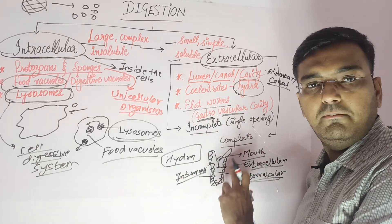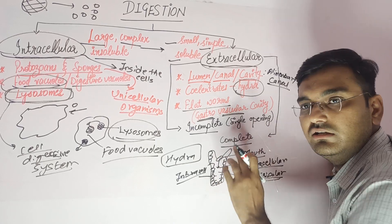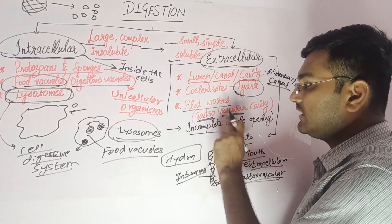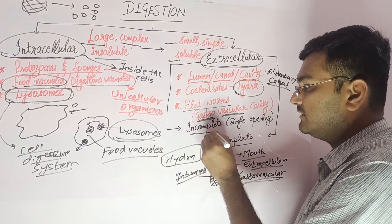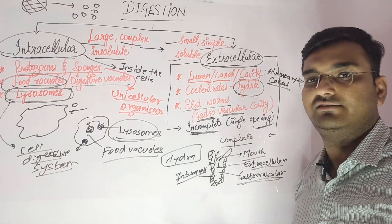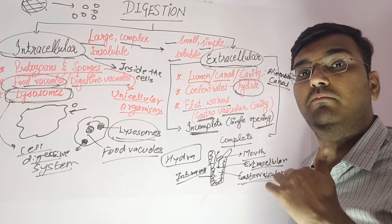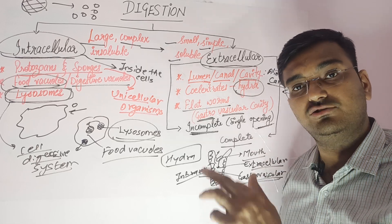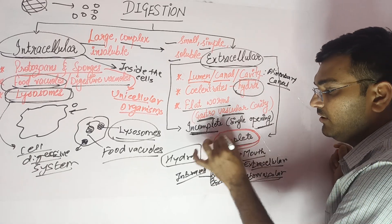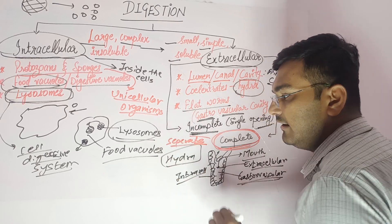Now, in hydra there is only one opening. That single opening serves as the mouth for ingestion, and excretory waste products also exit through the same opening. This type of extracellular digestion is called incomplete digestion — where there is only a single opening that serves both for ingestion and excretion. In contrast, human beings have a mouth for ingestion, and fecal matter is excreted via the anus — two separate openings. This is an example of complete digestion, with separate openings for ingestion and excretion.